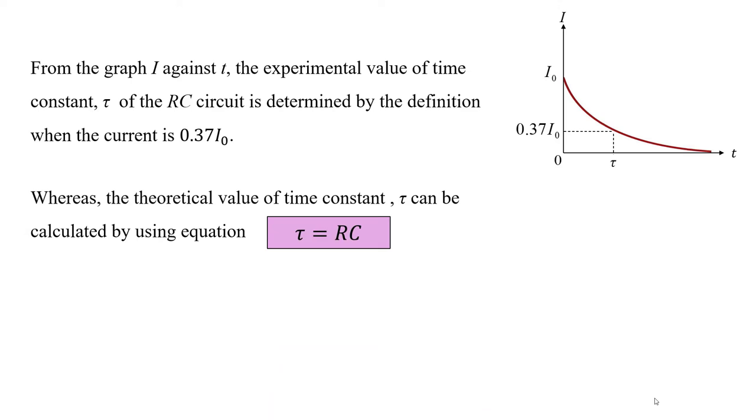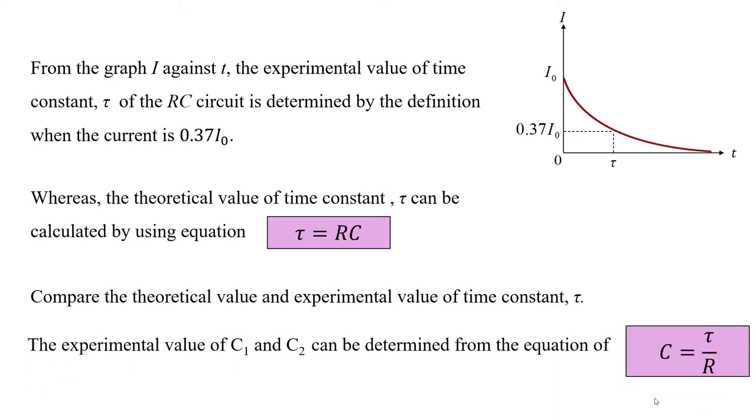Whereas, the theoretical value of time constant tau can be calculated by using equation tau equals to RC. Compare the theoretical value and experimental value of time constant tau, the experimental value of C1 and C2 can be determined from the equation of C equals to tau over R.